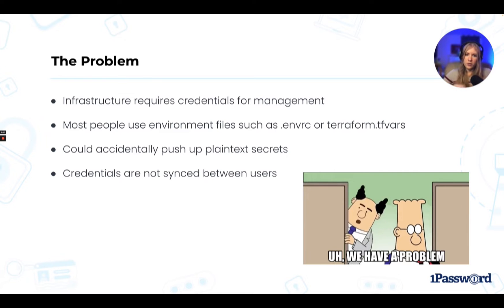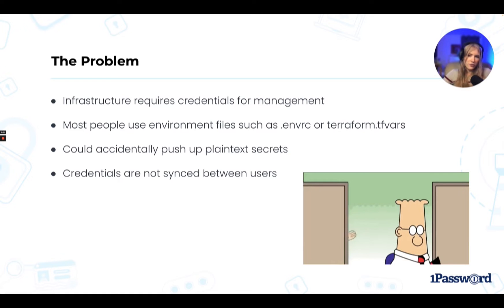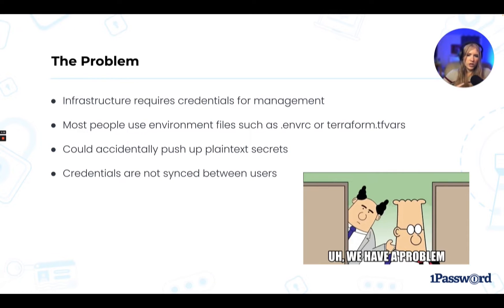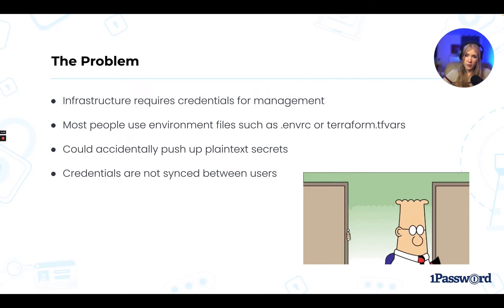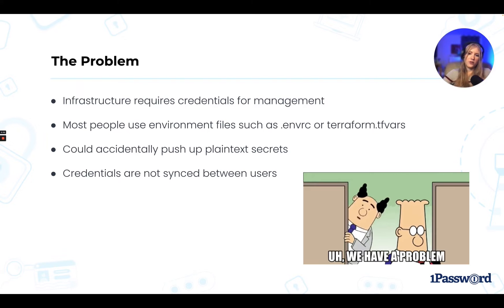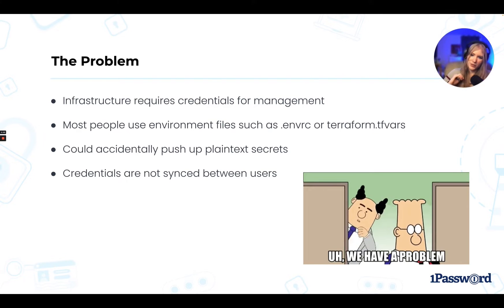Currently, most people use environment files with plain text passwords inside. But imagine this scenario: you've created a plain text environment file in order to make changes to your infrastructure using Terraform. Once done with your Terraform changes, you commit all files to source control. But your .gitignore was not configured to ignore your environment file filled with all these plain text secrets, and now they've been leaked to your repo.